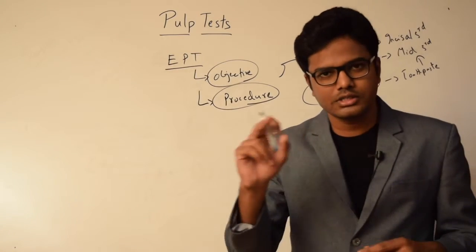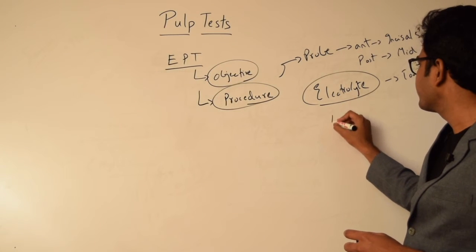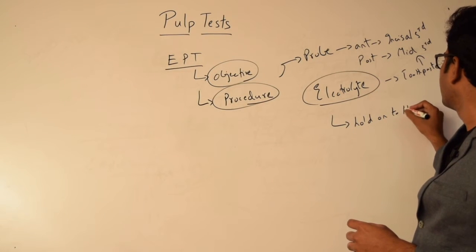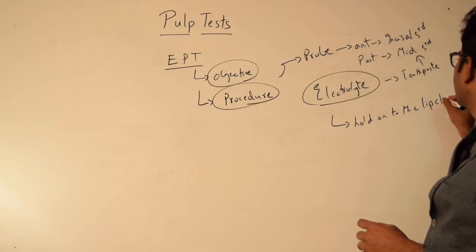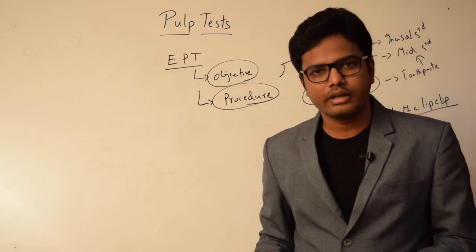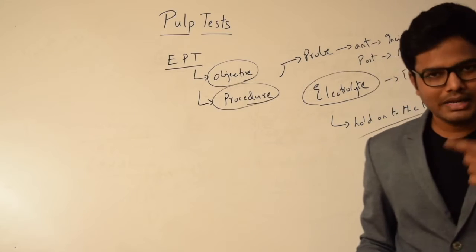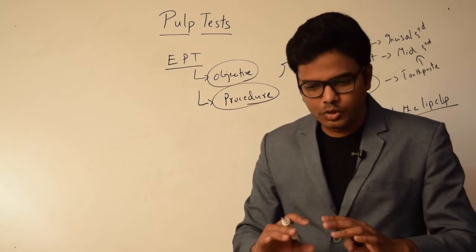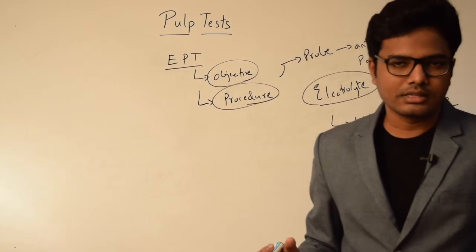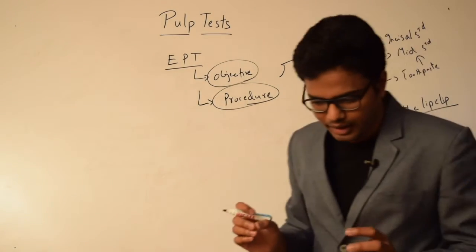The most important aspect of the entire procedure is closing the circuit. The circuit can be closed either by asking the patient to hold on to the lip clip which is provided by the manufacturer, or we'll place the lip clip directly inside the oral cavity where we will have a hook-like thing which is attached to the buccal mucosa. Closure of the circuit is very much important, or else we cannot elicit the result.